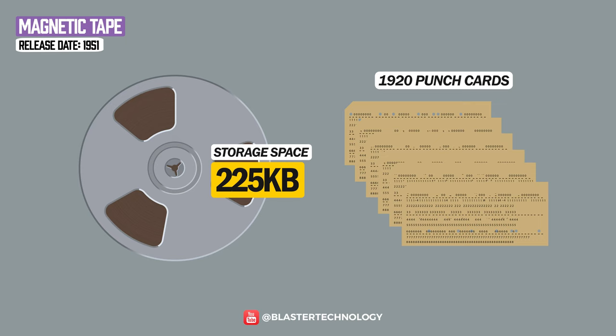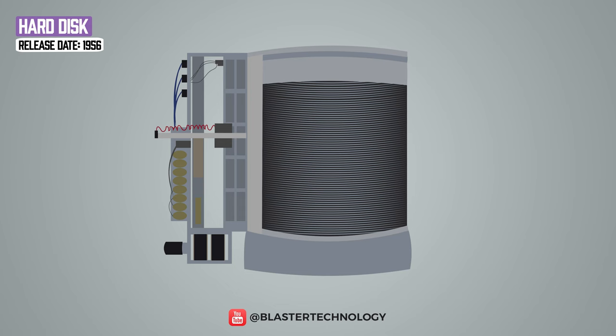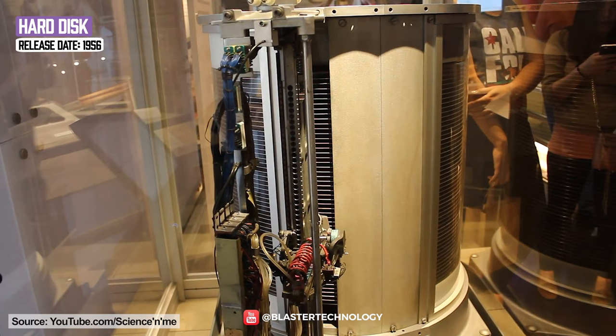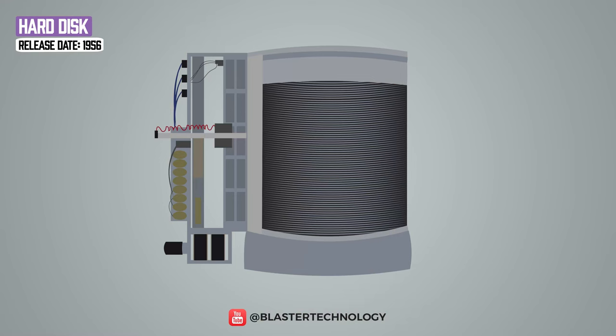In 1956, IBM invented the world's first hard drive, which weighed about a ton. It had 50 24-inch discs, a rotation speed of 12,000 rpm, and could store up to 5 megabytes of data. Specifically, such a hard drive could replace 23 magnetic tapes.